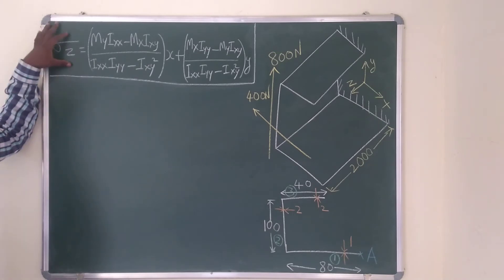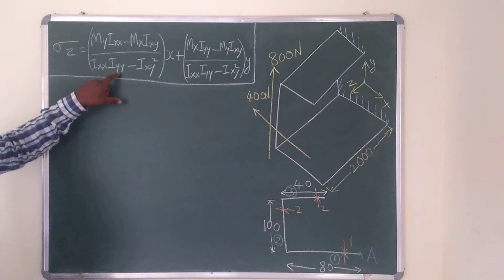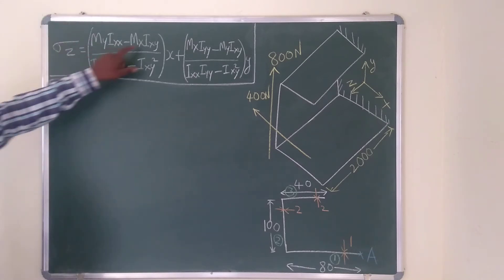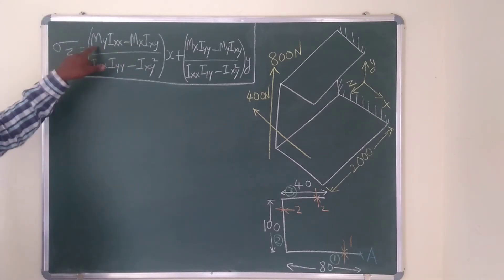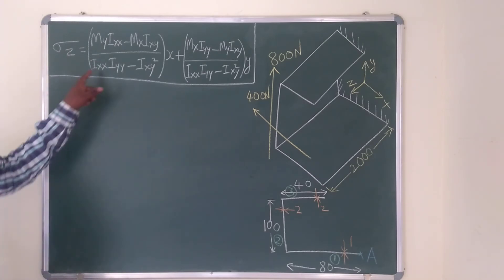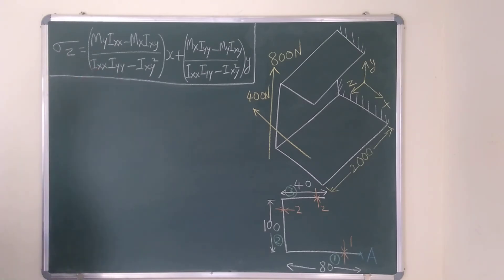In order to find out this, I need Ixx, Iyy, and Ixy — the moment of inertia values — and the values of Mx and My. To find out these moment of inertia values, I need to locate the centroid.